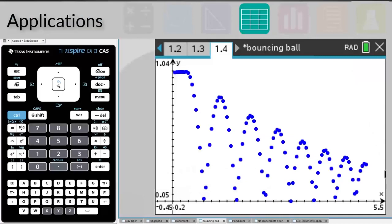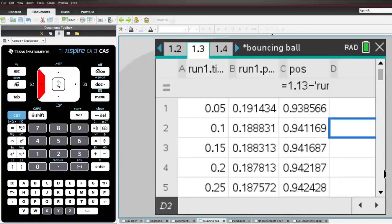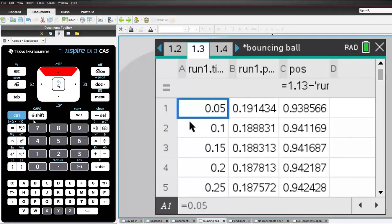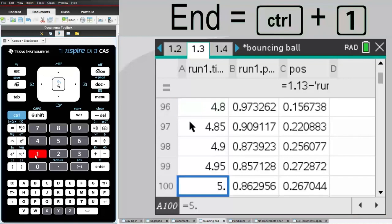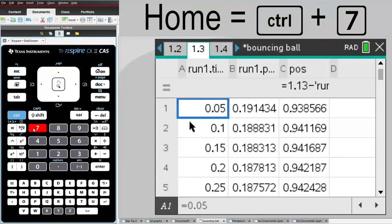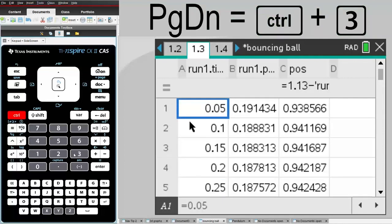When you have lots of data in a spreadsheet application, it can be time consuming to scroll down to the bottom of the list, or back to the top. Well, check out these great navigation tips. To go instantly to the bottom or end of a list, press CTRL and 1. Go back to the top, or up and down a page at a time.